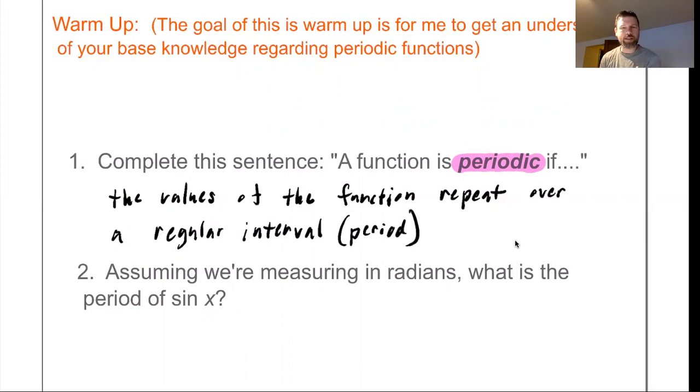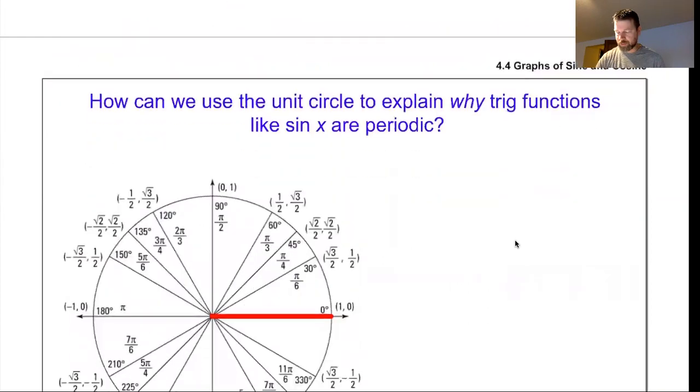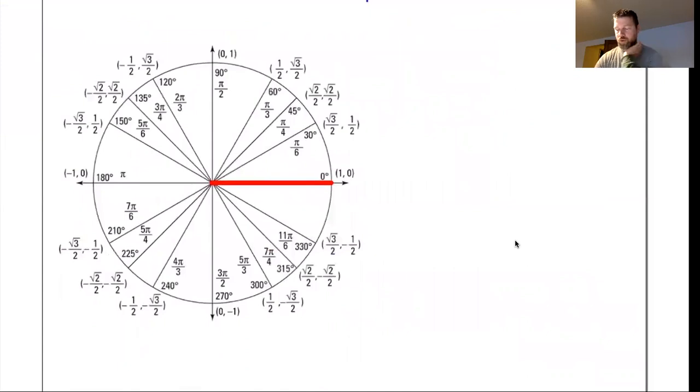Assuming we're measuring in radians, what is the period of sine of x? The period of sine of x would be 2π, and there's a few ways to explain why, but one of the best ways I like is by looking at the unit circle. We know that on the unit circle, the values of sine are just the y values. So starting at an angle of 0, the sine is 0, and then 1 half, and then square root of 2 over 2, and it keeps going as this angle goes up and around. Once the angle gets to π over 2, the sine values start to get smaller again. Smaller and smaller and smaller, until you have a sine of 0 when you have an angle of π.